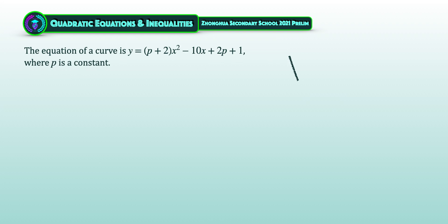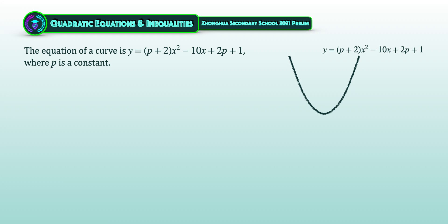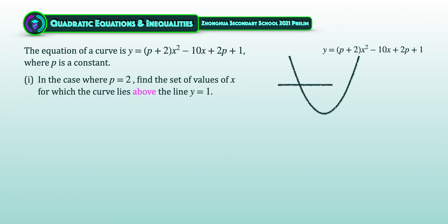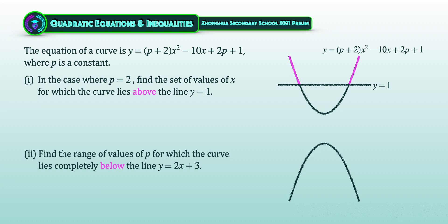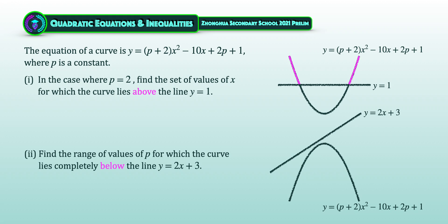The question begins with a curve equation y = (p + 2)x² − 10x + 2p + 1, where p is a constant. In part 1, where p = 2, find the set of x for which the curve lies above y = 1. In part 2, find the range of p for which the curve is completely below y = 2x + 3. This question is from Zhonghua Secondary School 2021 Preliminary Examination for Additional Mathematics.